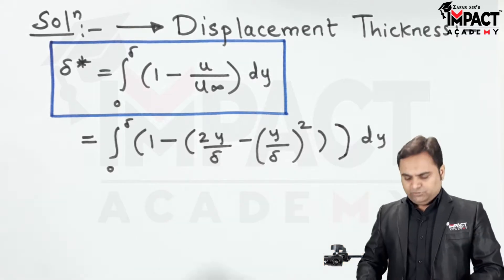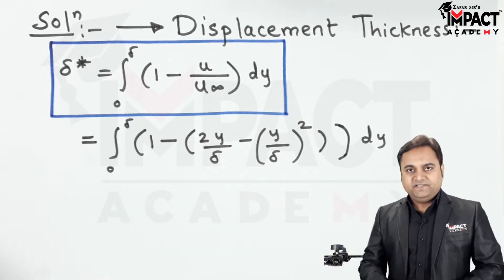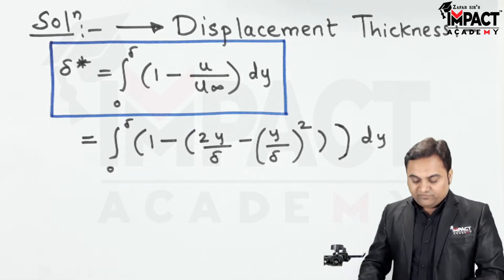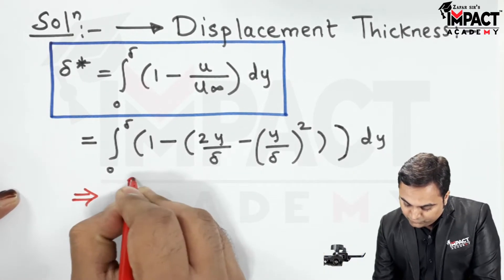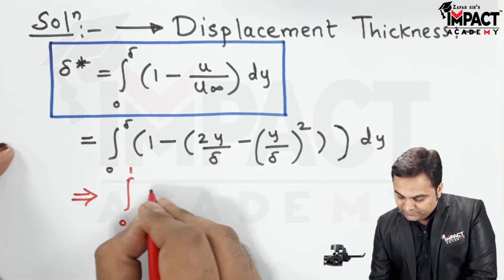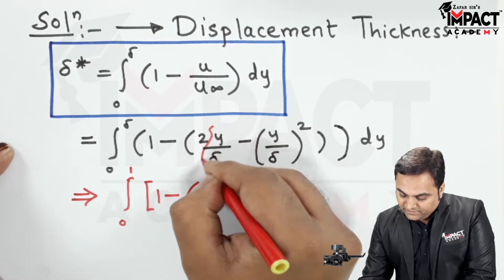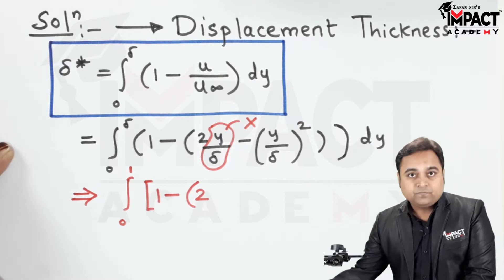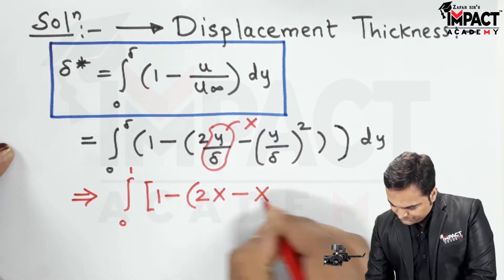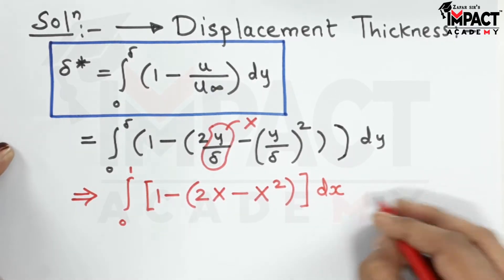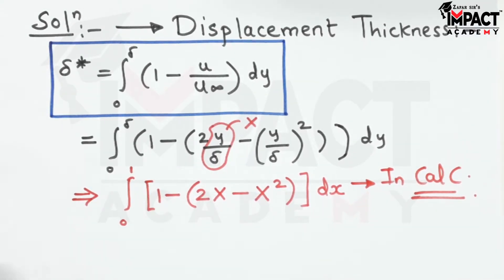When we have such an integration, there is no need to solve it manually. I will show the shortcut method using the calculator. The function is written with limits 0 to 1, replacing y/δ with x. So we integrate from 0 to 1: (1 minus (2x minus x²)) dx.